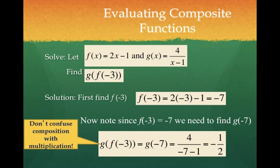This is where we send negative 3 into f, get a number negative 7, and we send that new number negative 7 into g to get our negative 1 half answer.